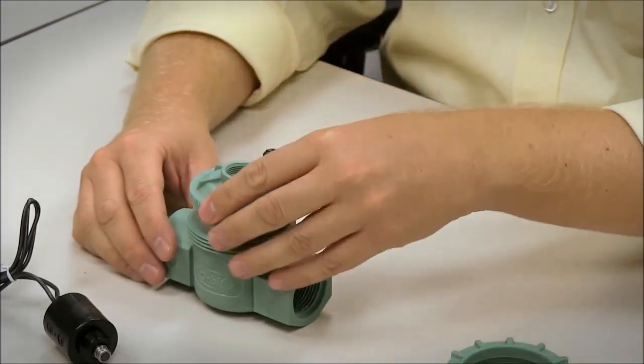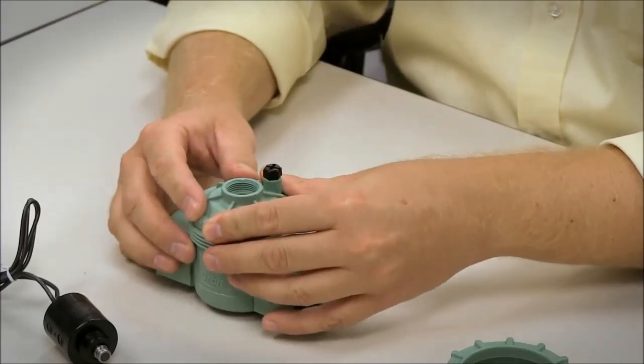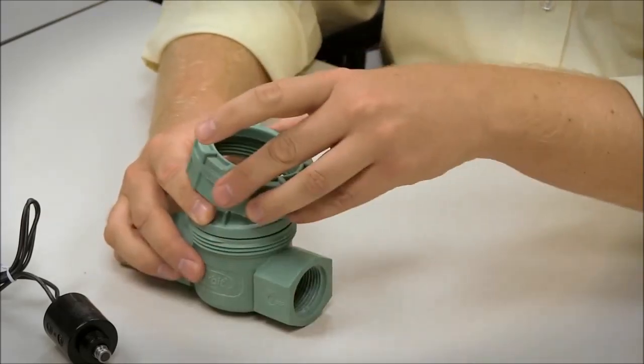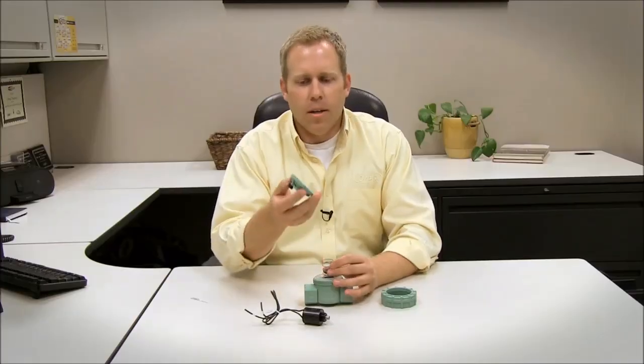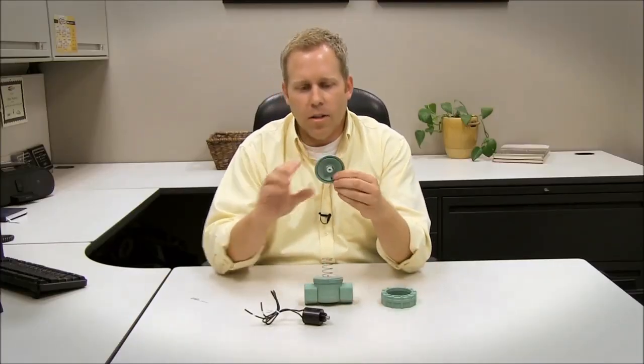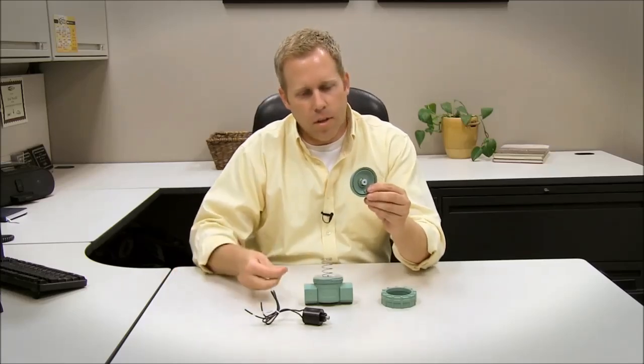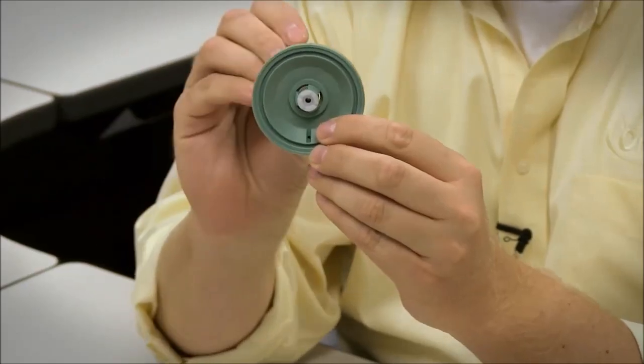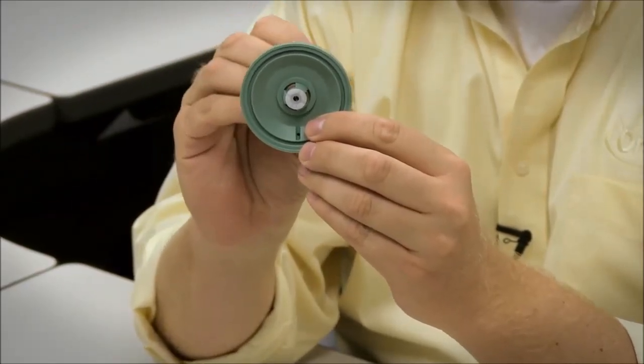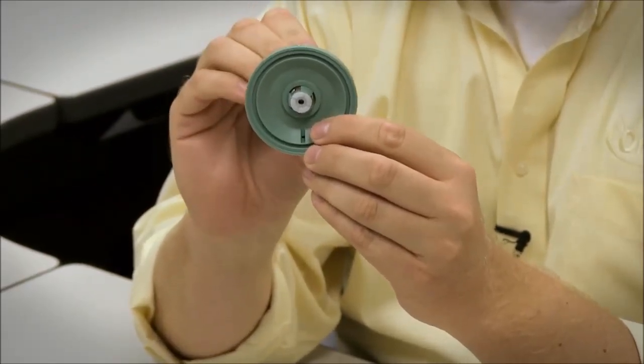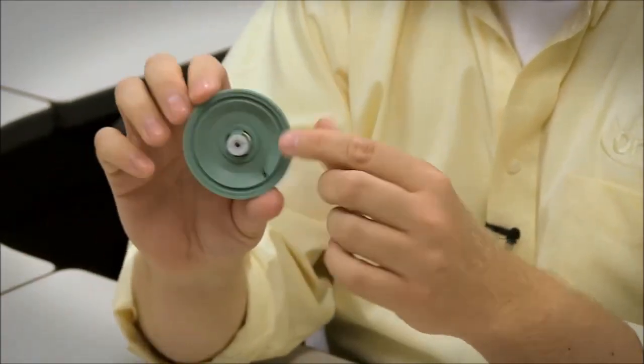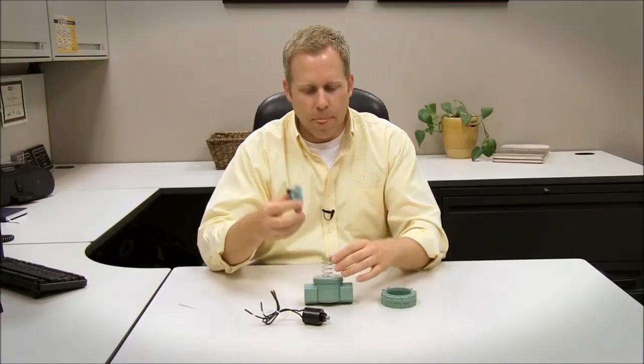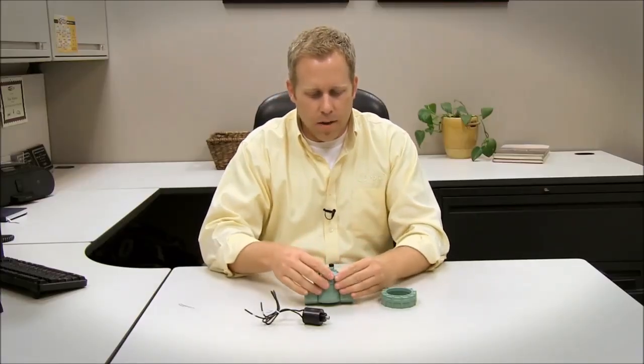After that, we can put on the lid of the valve and make sure that goes down and then the lid ring. Now I want to show you one more thing before I get that back together. The actual lid of the valve, you'll want to make sure there's no debris inside of this little orifice and sometimes if you get a seed or something stuck in there, I'll go ahead and make sure that that's clear with a paper clip. So make sure there's no debris in there.